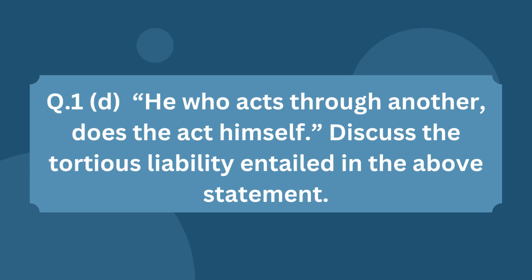The next question is from Torts: 'He who acts through another does the act himself — discuss the tortious liability entailed in the above statement.' This question is about vicarious liability. The statement itself is a translation of the Latin maxim 'Qui facit per alium facit per se,' which means he who acts through another does the act himself. Here, principal-agent, master-servant, or employer-employee relationships can be mentioned.